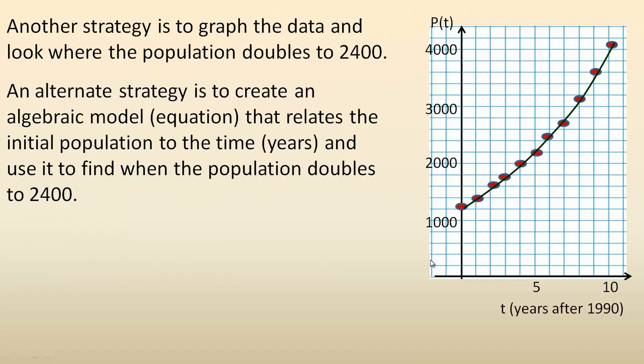Another strategy would be to graph this data and look for when the population doubles to 2400. So this is all my points plotted. The scale here is 200, so 2, 4, 6, 8... that would be 1000, 1200, 1400, 1600, 1800, 2000, 2200, 2400. If we go across from 2400, it hits the graph about here, and so it's about 6 years after 1990, which would be 1996.